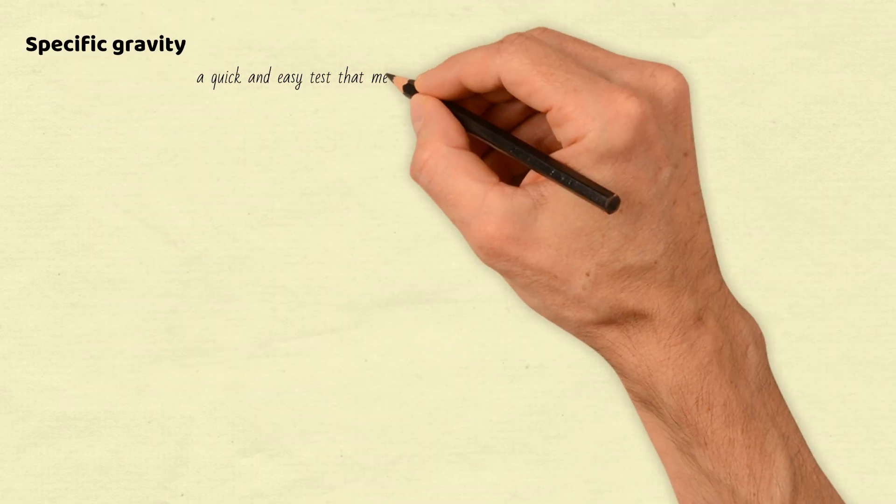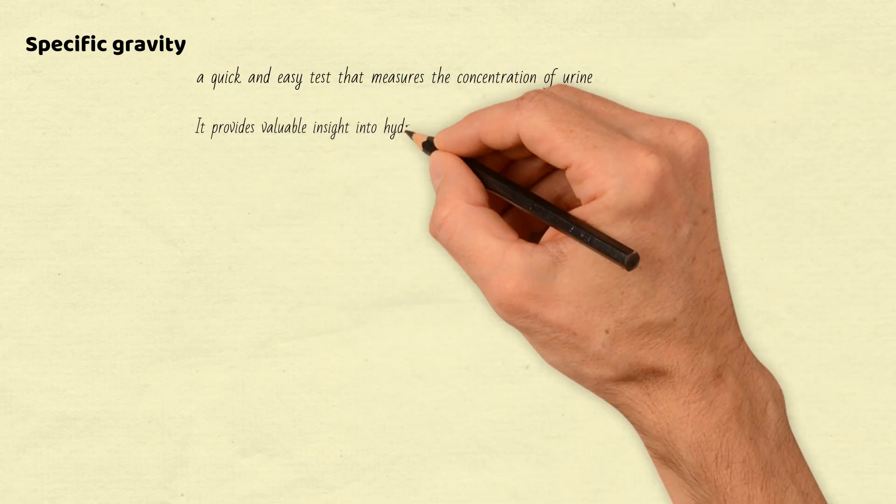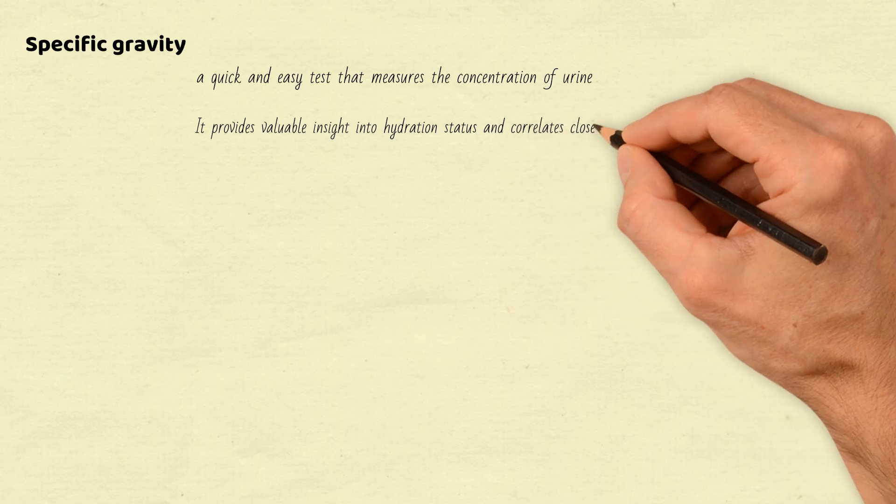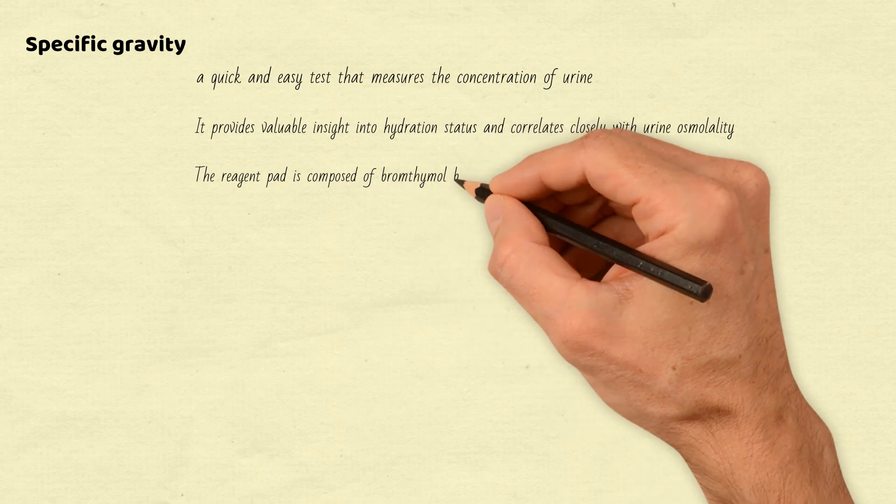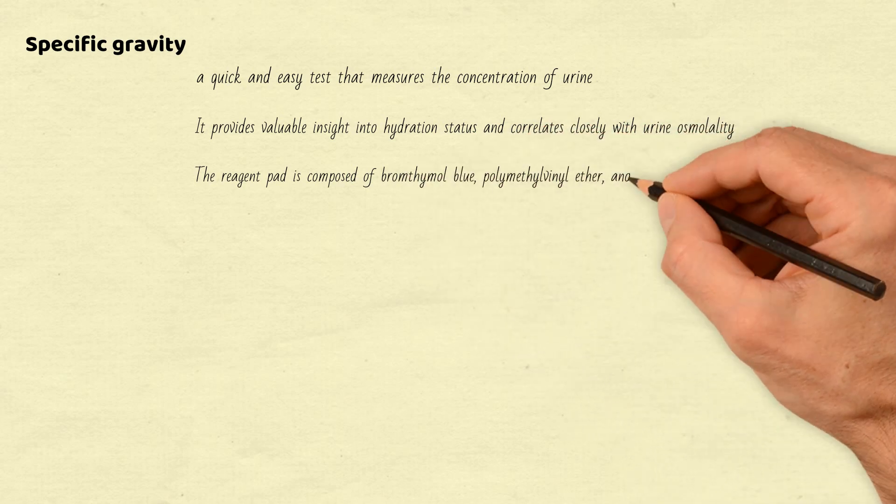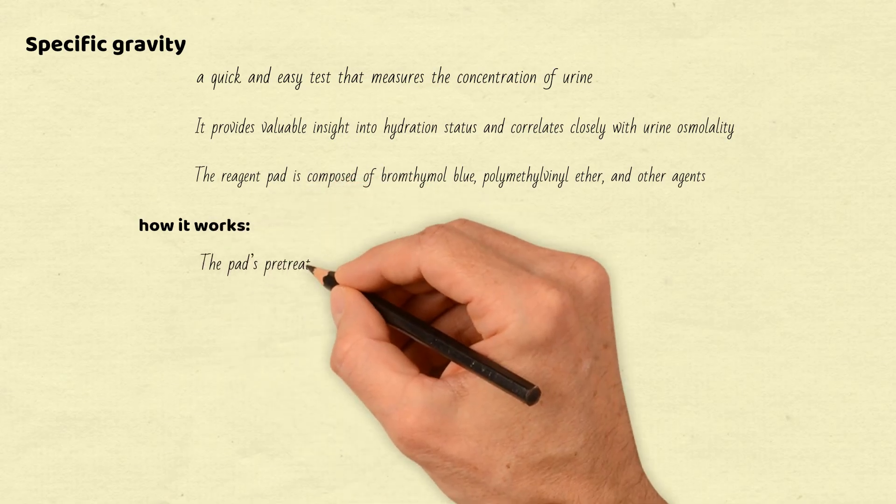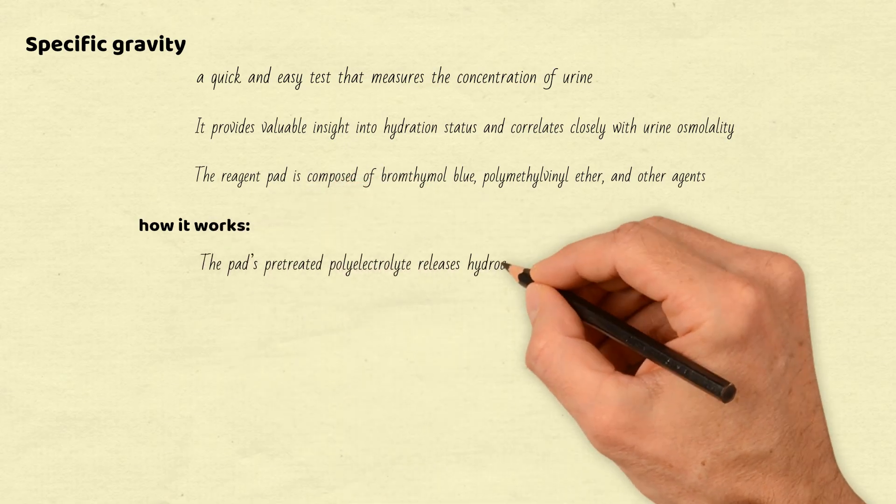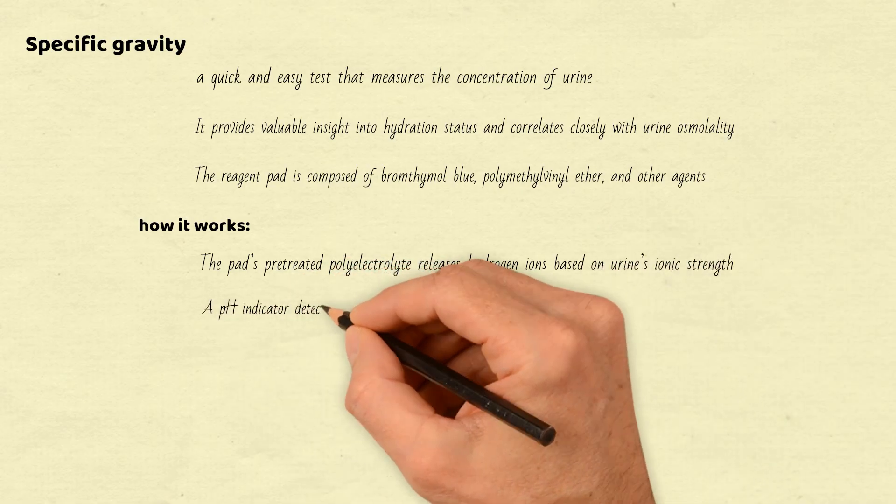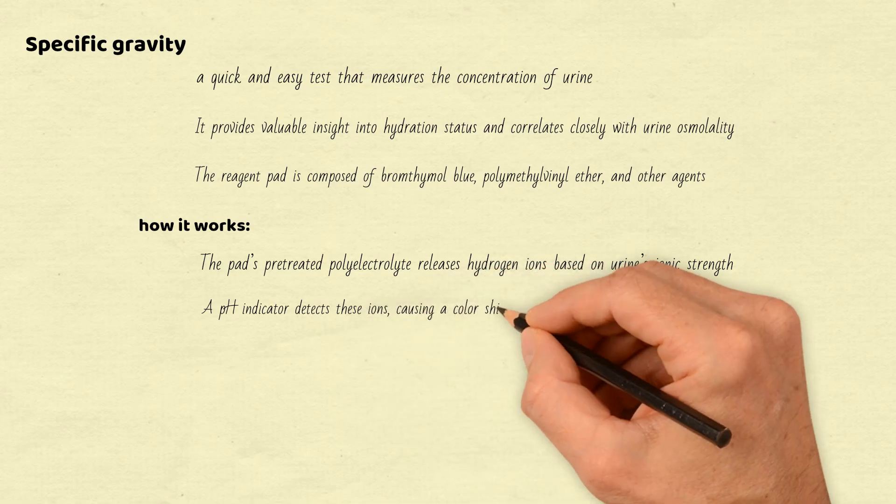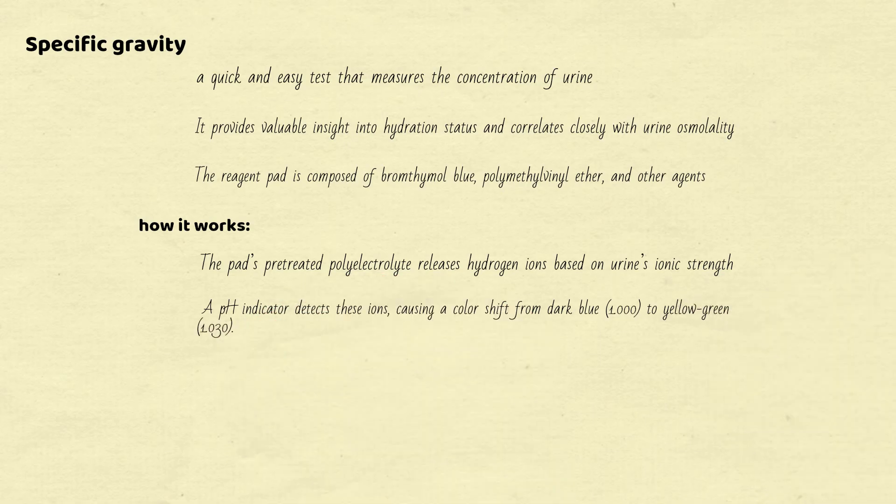Specific gravity, a quick and easy test that measures the concentration of urine. It provides valuable insight into hydration status and correlates closely with urine osmolality. The reagent pad is composed of bromthymol blue, polymethylvanil ether, and other agents. Here's how it works. The pad's pretreated polyelectrolyte releases hydrogen ions based on urine's ionic strength. A pH indicator detects these ions, causing a color shift from dark blue (1.000) to yellow-green (1.030).